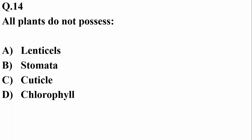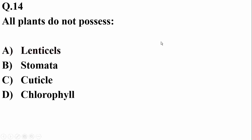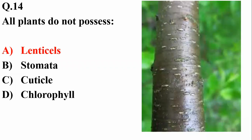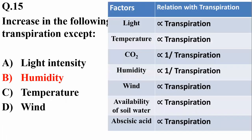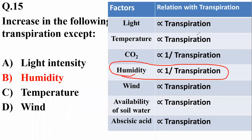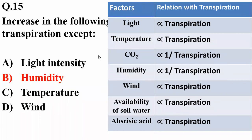Question fourteen: all plants possess stomata, cuticle, and chlorophyll, but lenticels are not found in all plants — these are tiny openings in the older bark. So Alpha is the right answer. Question fifteen: an increase in which factor does NOT increase the rate of transpiration? Humidity — because an increase in humidity decreases the rate of transpiration, as humidity is inversely proportional to transpiration rate.